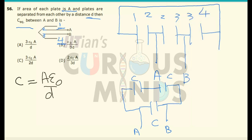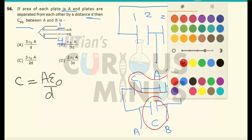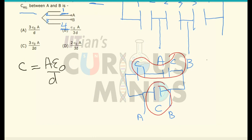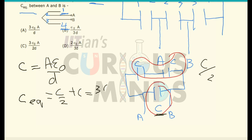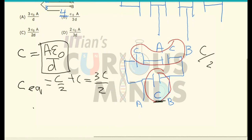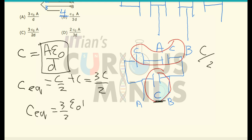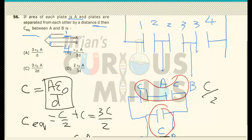Now these two capacitors — 1-and-2 and 3-and-4 — are connected in series, and then that combination is in parallel with C. In series, the capacitance will be equal to C/2. In parallel with C, the resultant equivalent capacitance will be equal to C/2 plus C, which equals 3C/2. The value of each capacitance is Aε₀/D, so the equivalent capacitance is 3/2 × ε₀A/D, which is equal to option C.